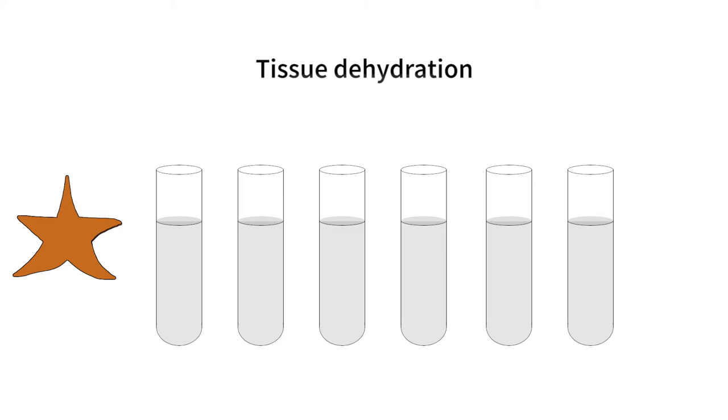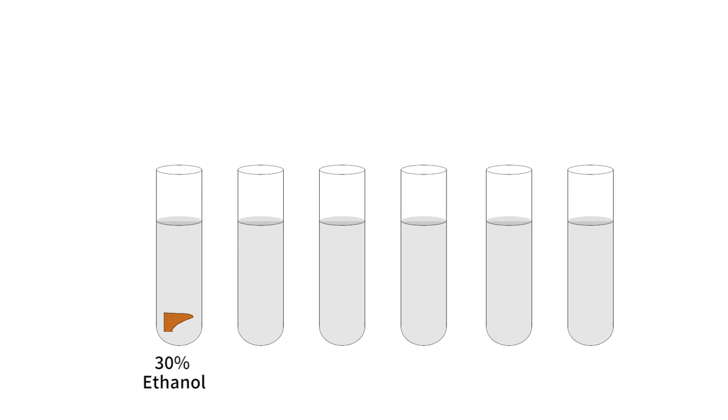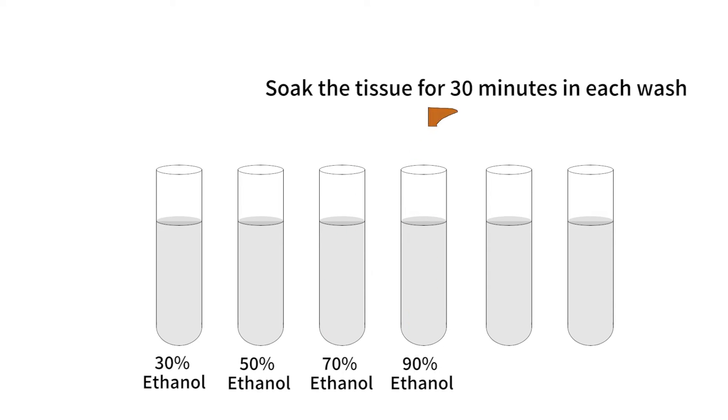Now, all of the water in the tissue needs to be removed through a dehydration process. This dehydration step is done with washes of sequentially higher concentrations of ethanol from 30 to 100% for 30 minutes in each wash.